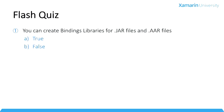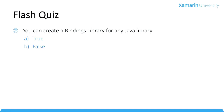Here's a short quiz. True or false: you can create bindings libraries for both Java archive and Android archive files. That's true — it works for both. And true or false: you can create bindings libraries for any Java library. Based on what we discussed, the most appropriate answer is false. The Xamarin tooling targets the specific case where you have a jar file that was originally targeted to be used with native Android apps.